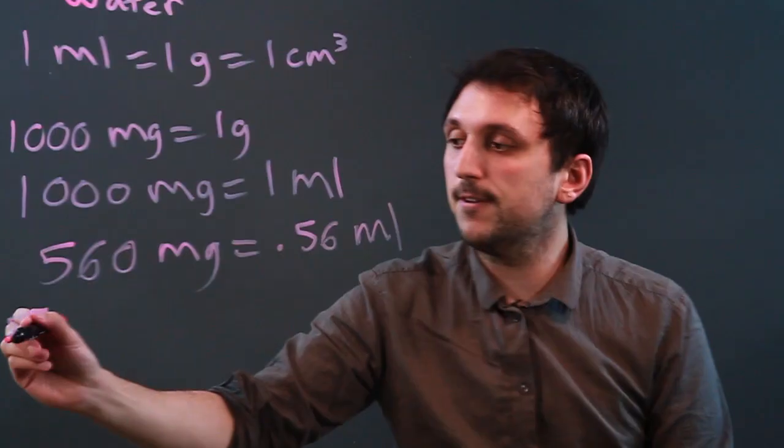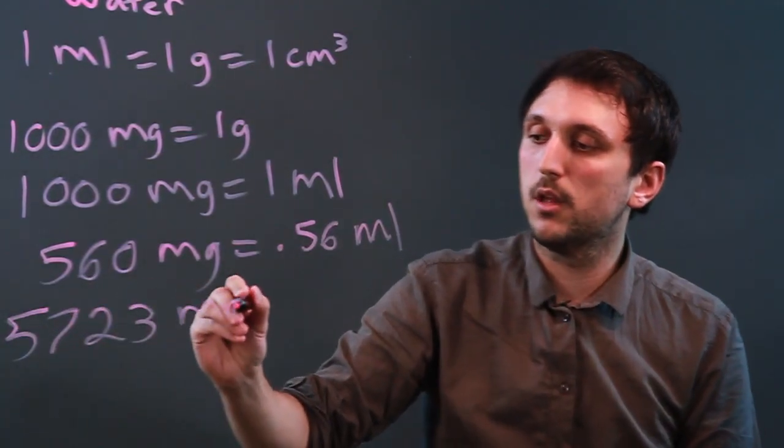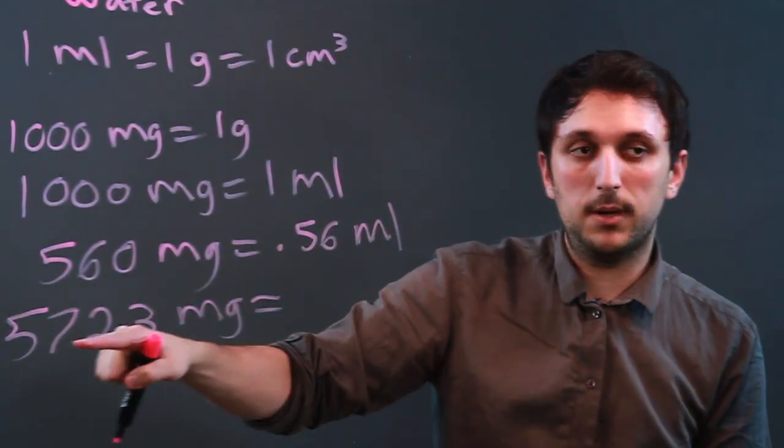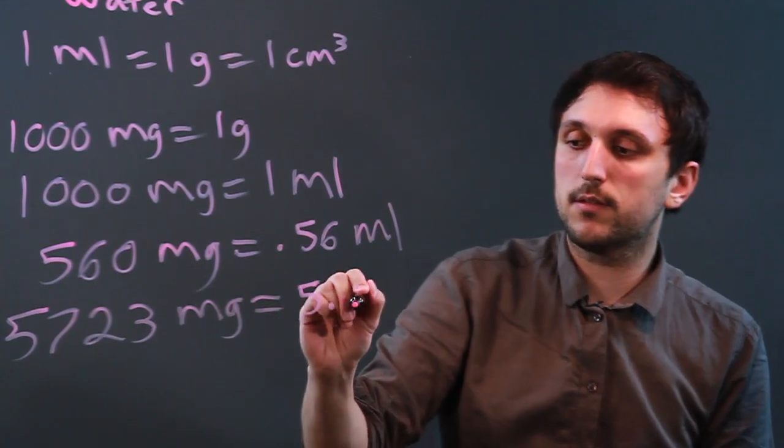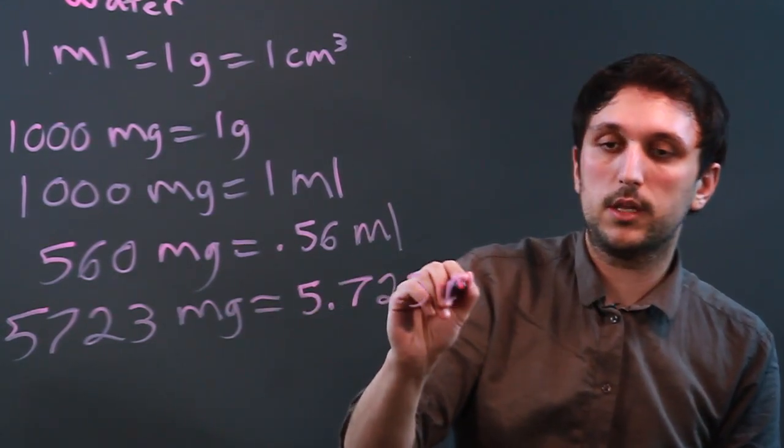Or if we had 5,723 milligrams, that would be divided by 1,000, which equals 5.723 milliliters.